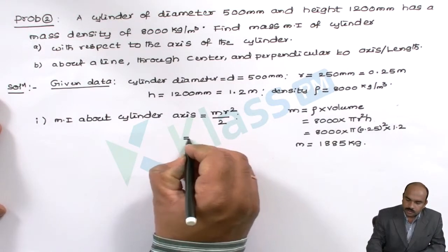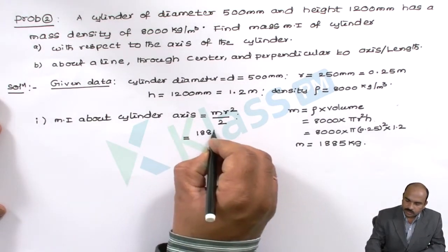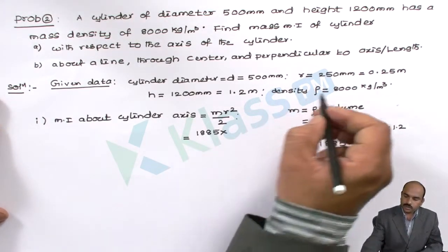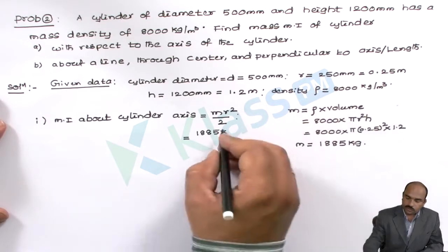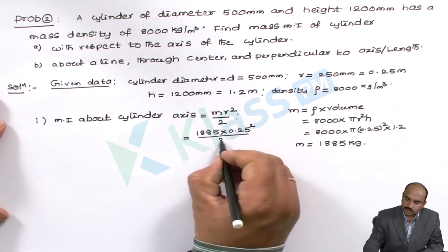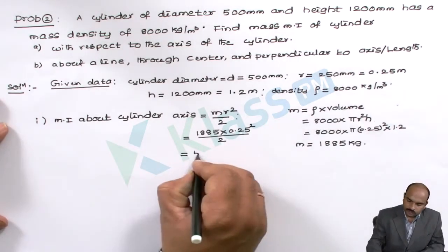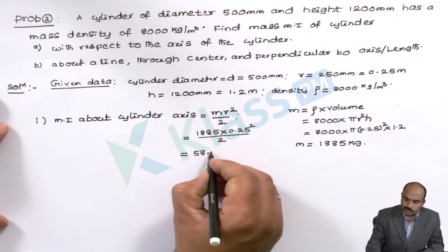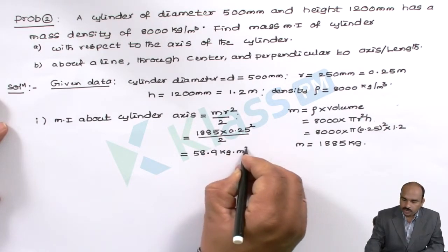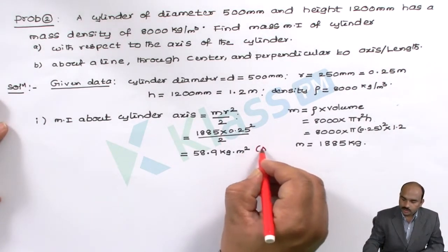Now substituting that mass value into the formula: I = 1885 × (0.25)² / 2. The answer is 58.9 kg·m². This is the answer for the first part — the moment of inertia about the cylinder axis.